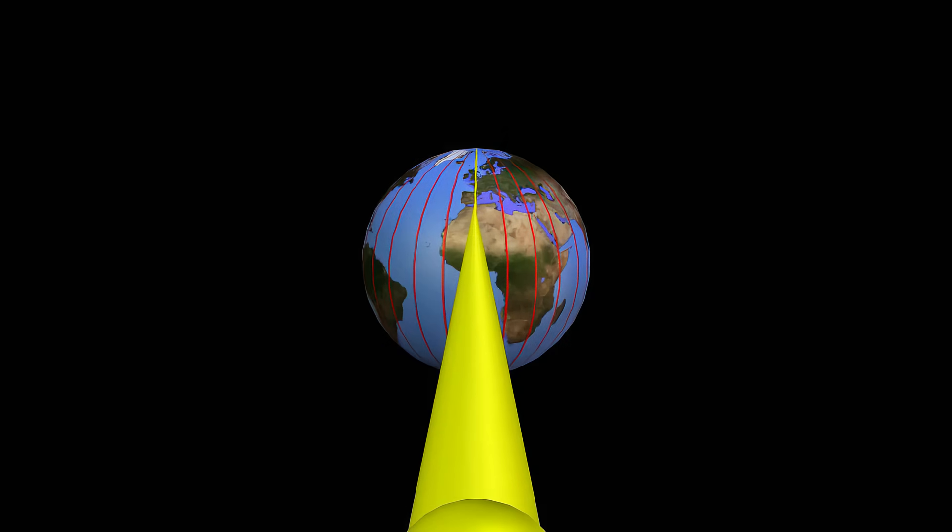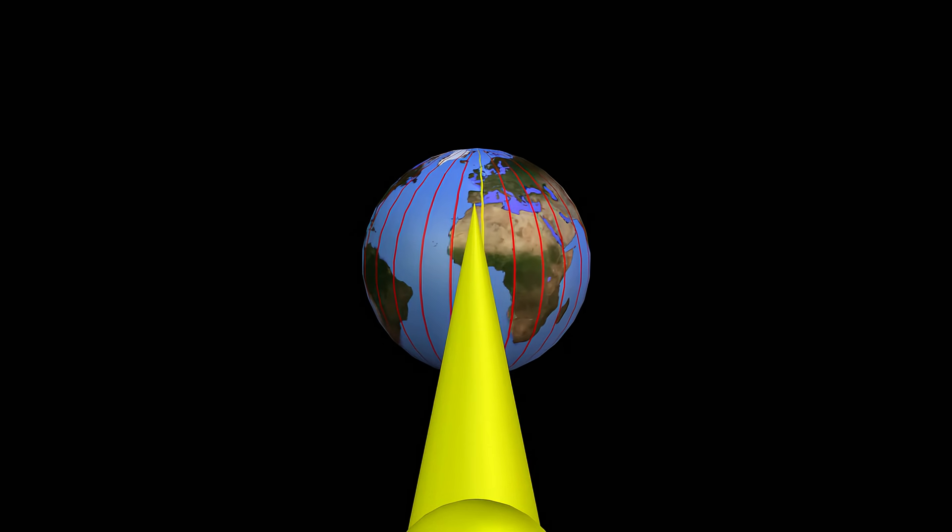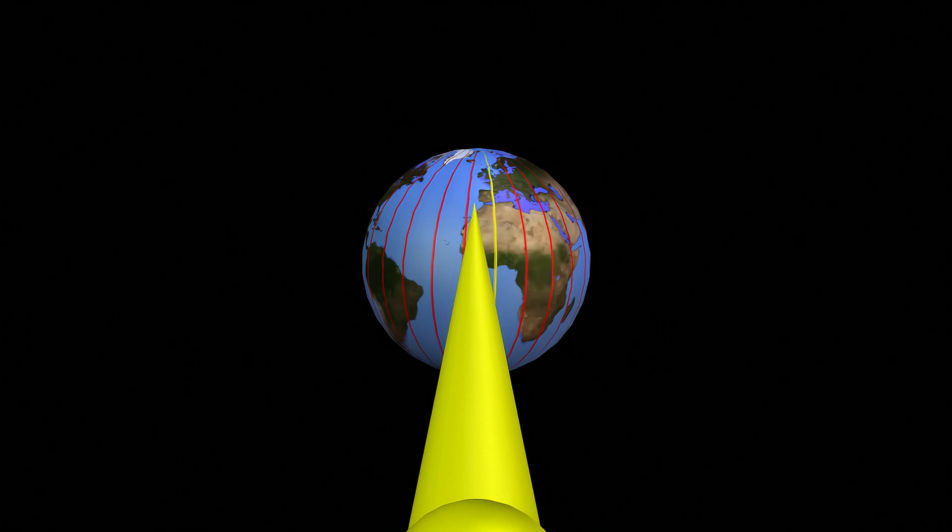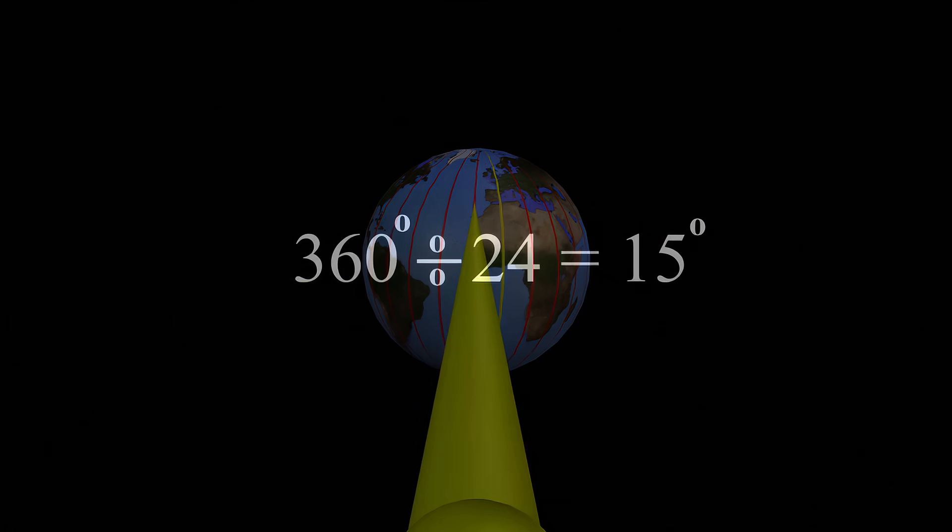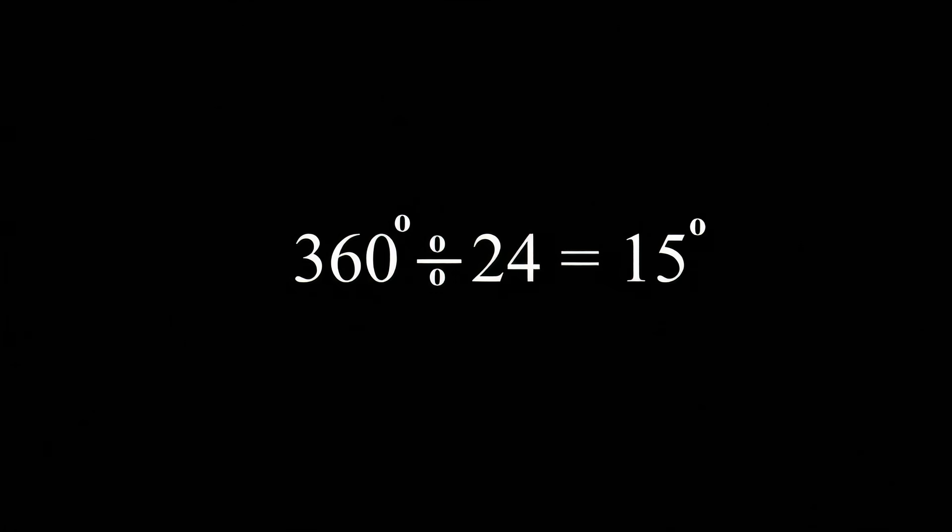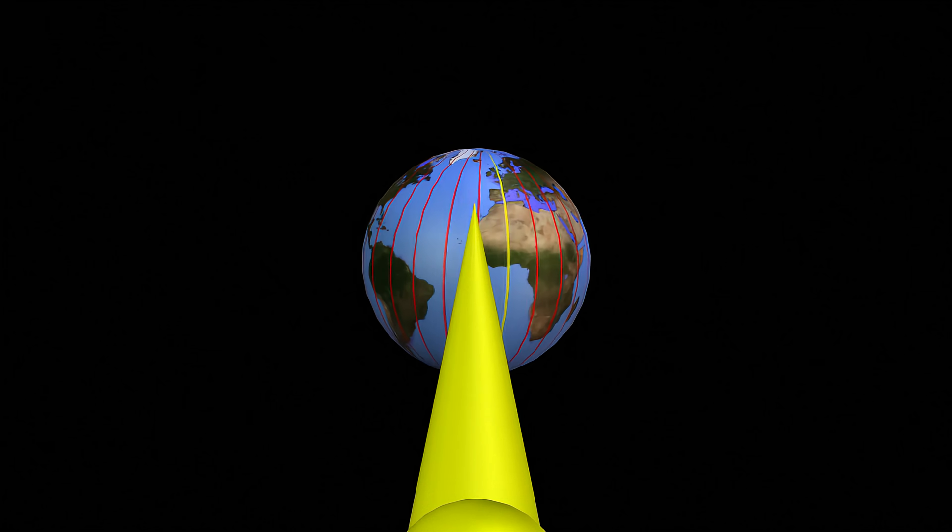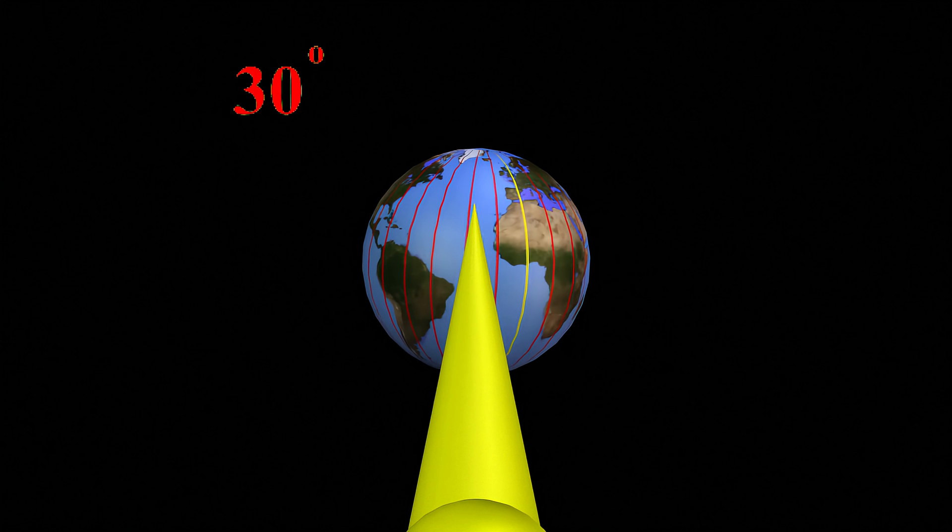As the Earth rotates, the sun no longer sits above the prime meridian. It is now sweeping past other lines of longitude. The Earth rotates 360 degrees in 24 hours. That's 15 degrees per hour. One hour after noon in Greenwich, the noontime sun now sits directly above 15 degrees of longitude. Two hours later, it sits above 30 degrees of longitude.